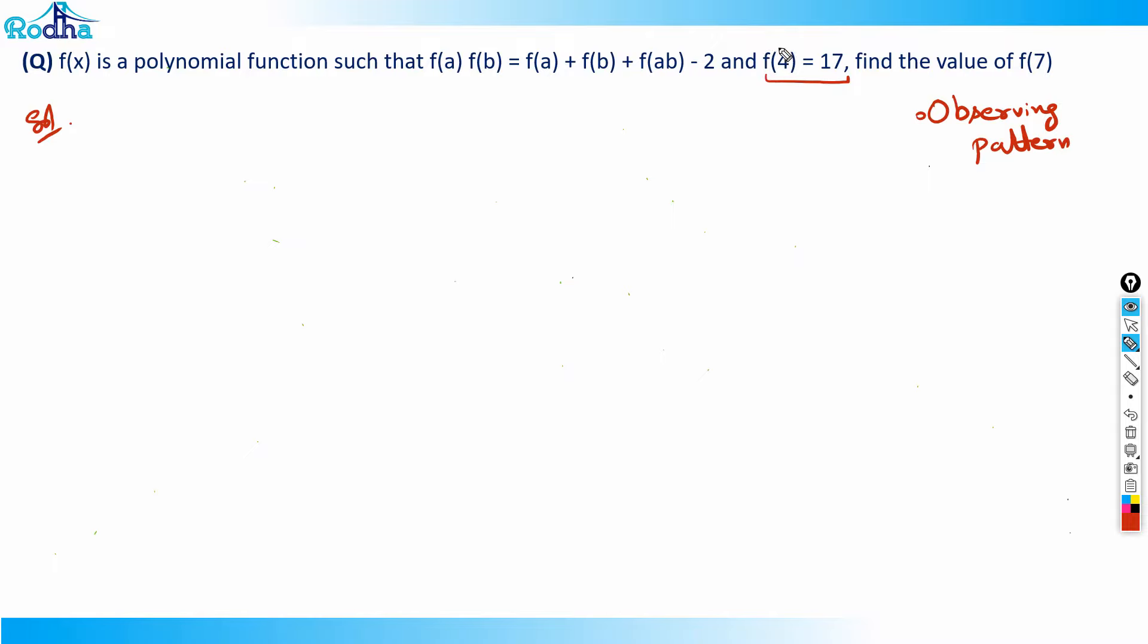Let's try to put a = 4 and b = 4. I can put any value because f(a) and f(b) are independent functions here. If I put these values, I get f(4)·f(4) = f(4) + f(4) + f(16) - 2.